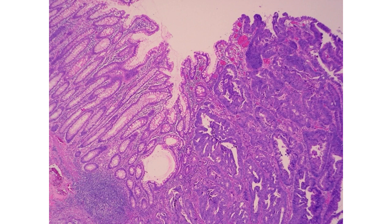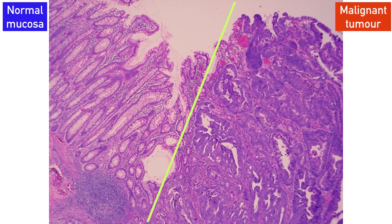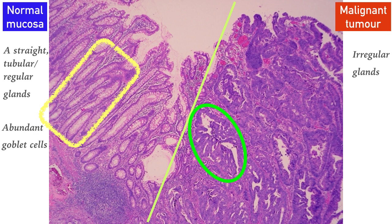Under low magnification, you can appreciate the difference between normal and malignant mucosa. The normal colonic mucosa exhibits straight tubular regular glands with an abundance of goblet cells appearing clear in color, while the malignant cells on the right side arrange forming an irregular glandular pattern with a reduced number of goblet cells.